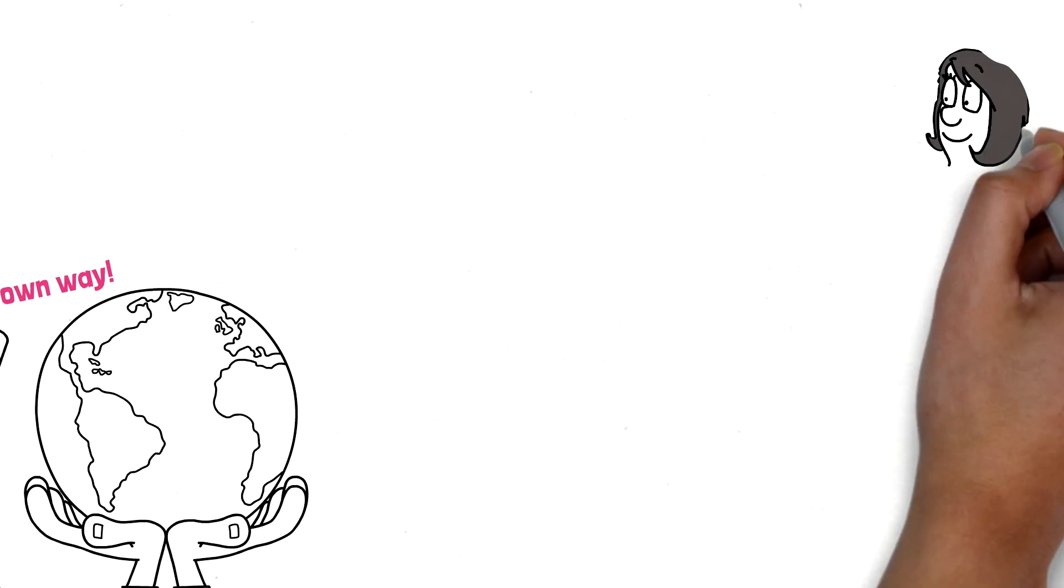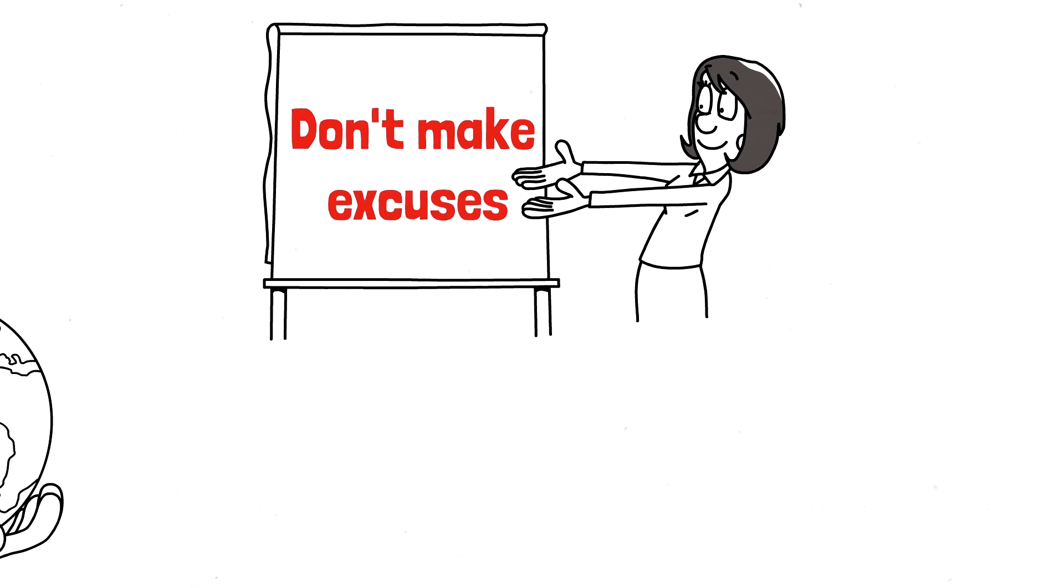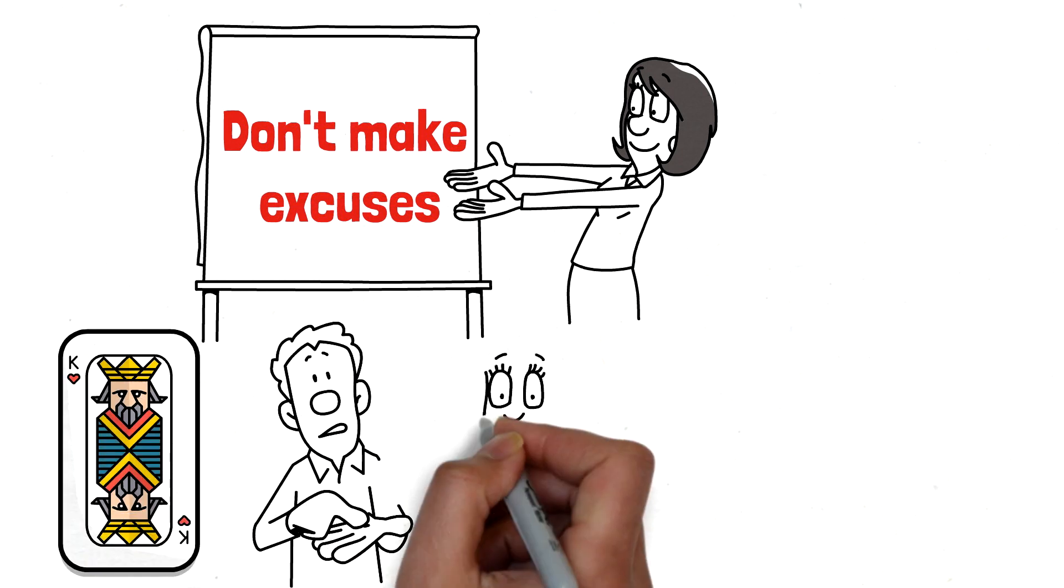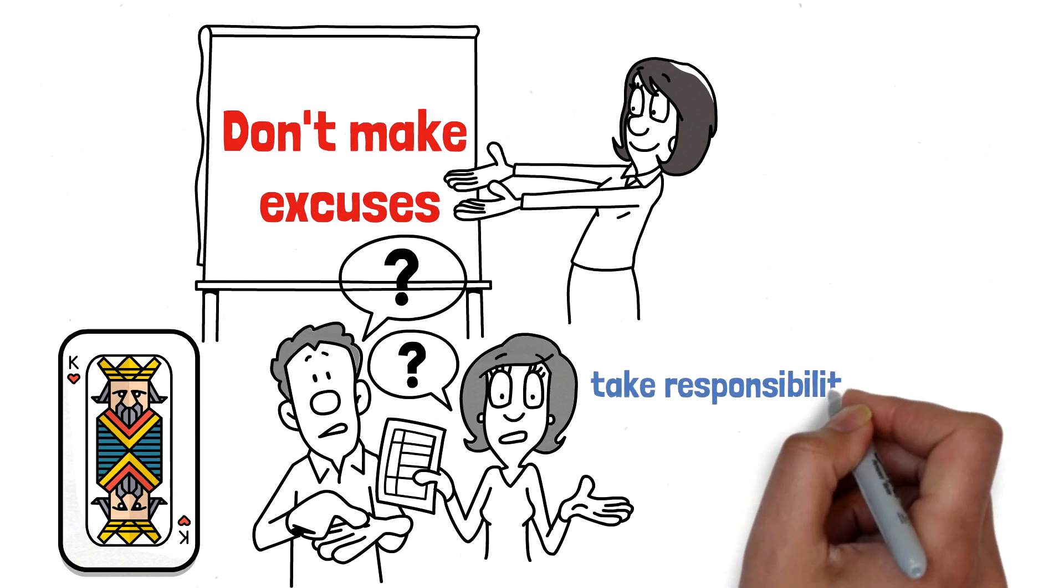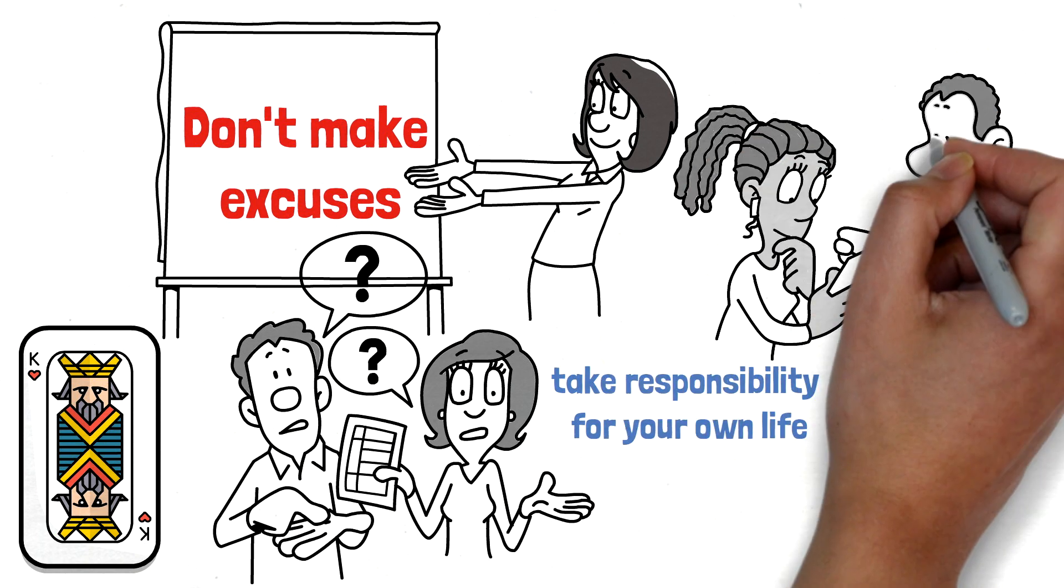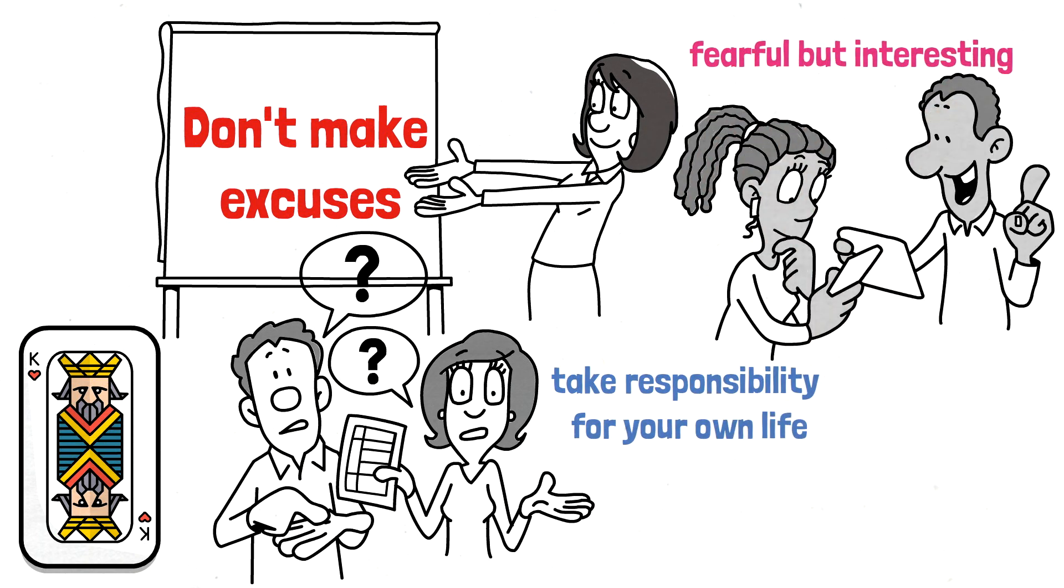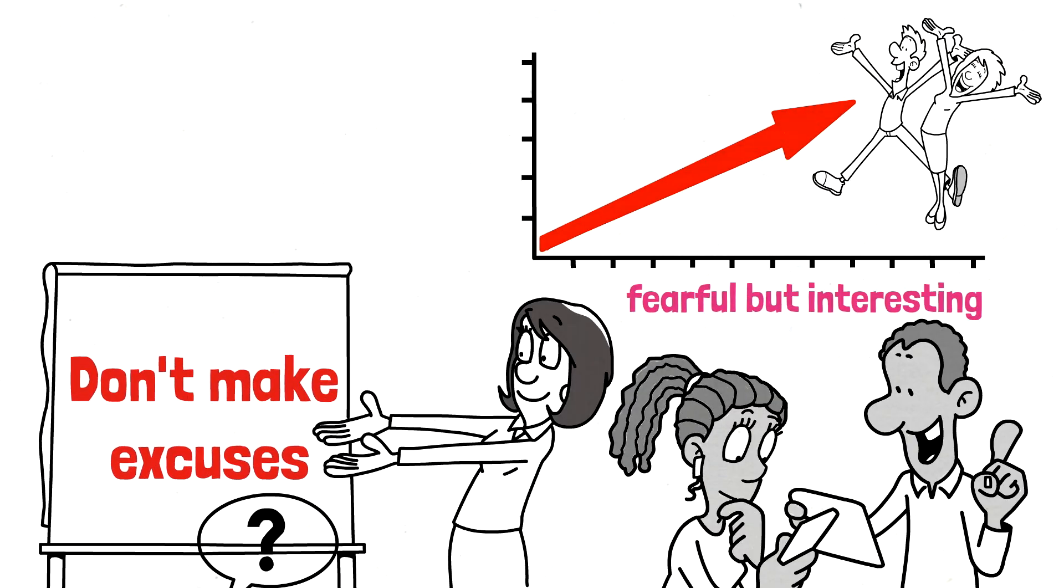Fourth thing: give up excuses. The problem is not with the cards dealt, but with how you play the hand. Successful people know that they are responsible for their own lives, regardless of their starting point, their weaknesses, and past failures. Realizing that you are responsible for what happens next in your life will make you find life both scary and exciting. Because when you do, that becomes the only way you can succeed.